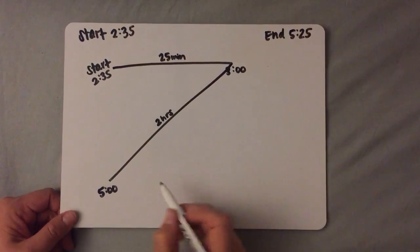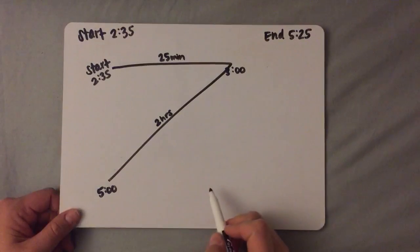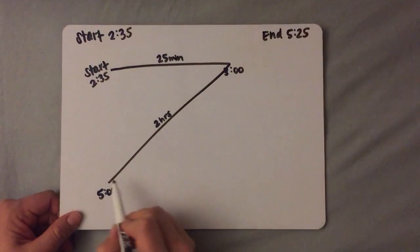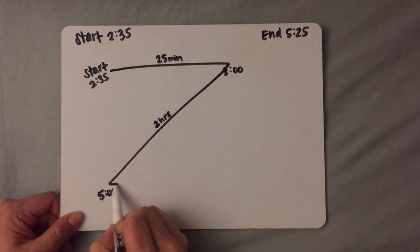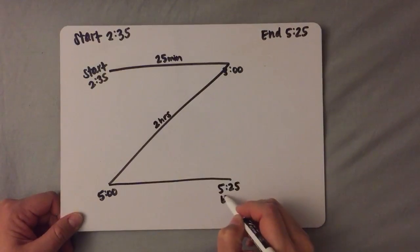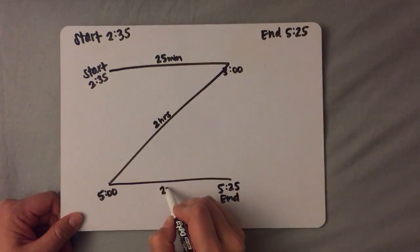The last zoom that you'll do is to go from this hour to your end time, so from 5 o'clock to 5:25. So from here to the end which is 5:25, label it end and you write down the amount of minutes from 5 to 5:25 right here in the middle.